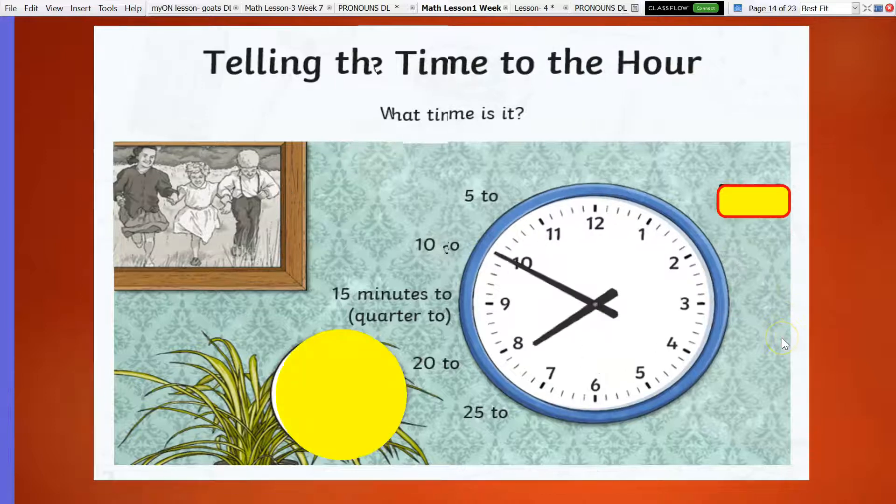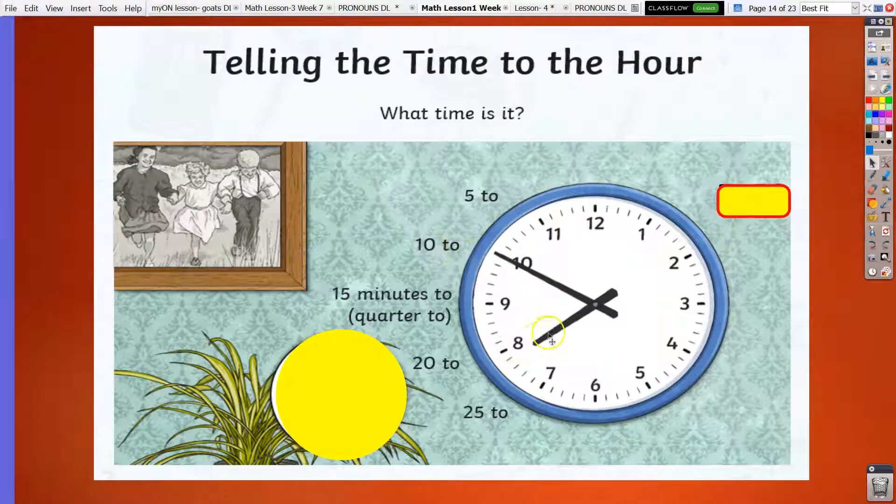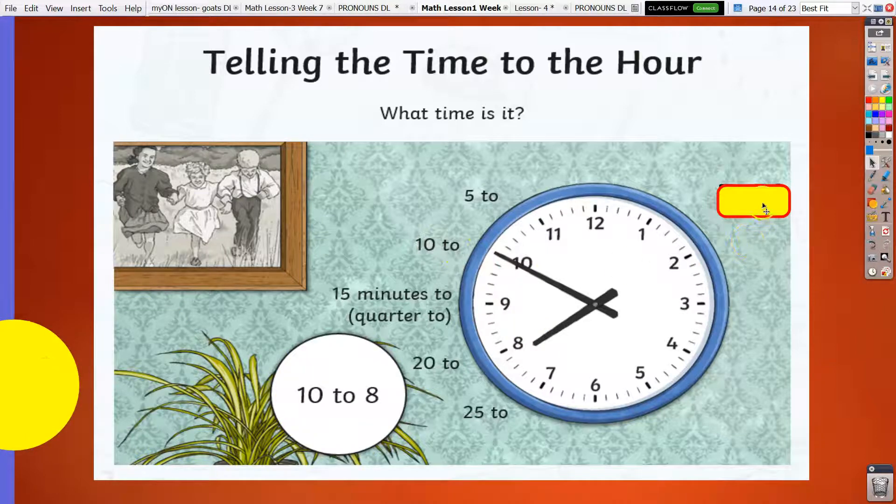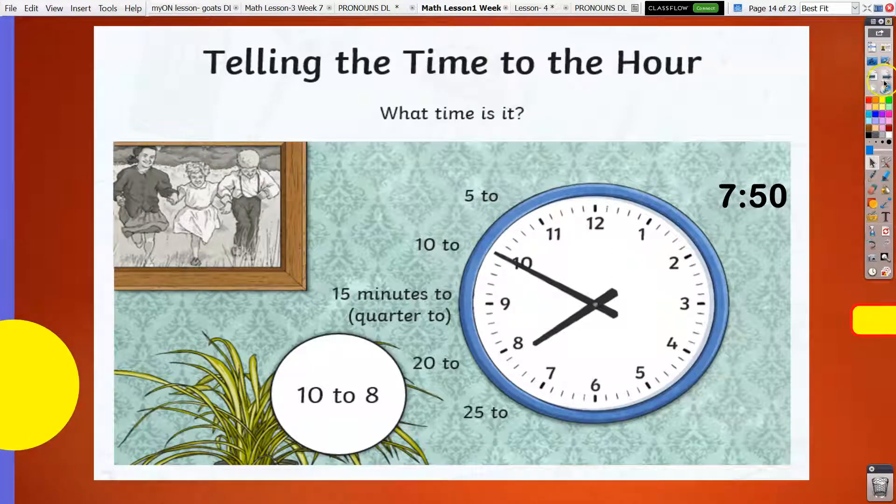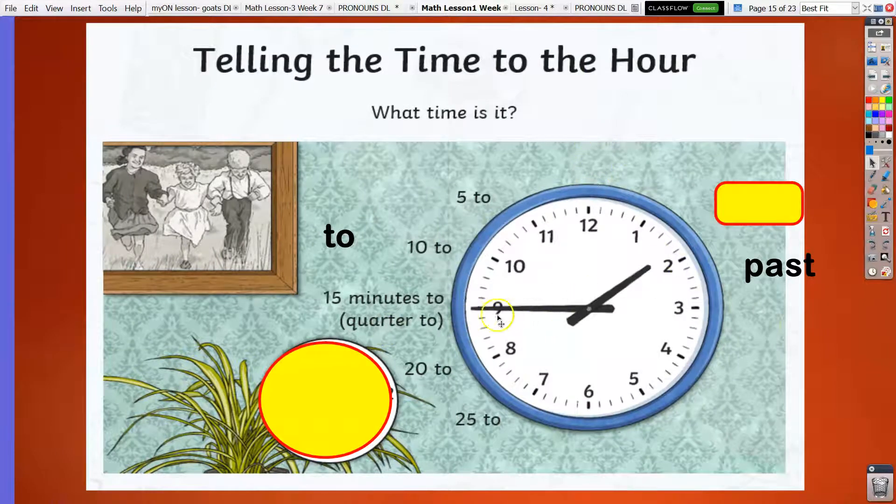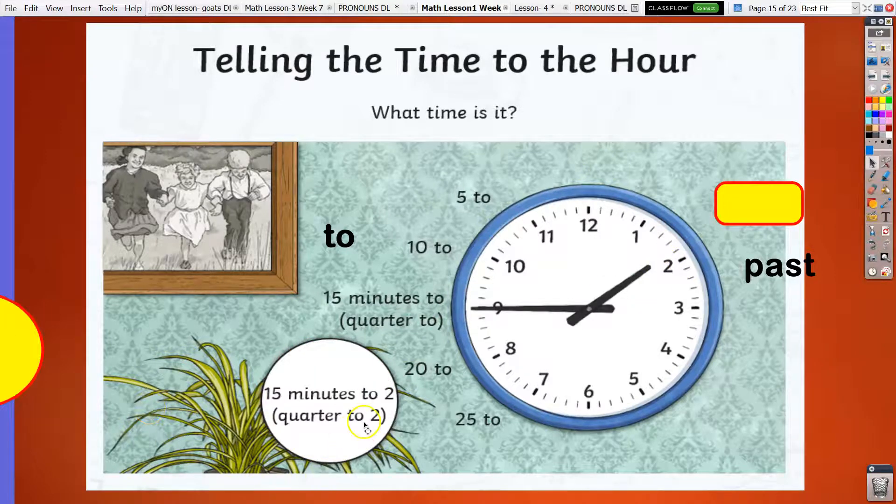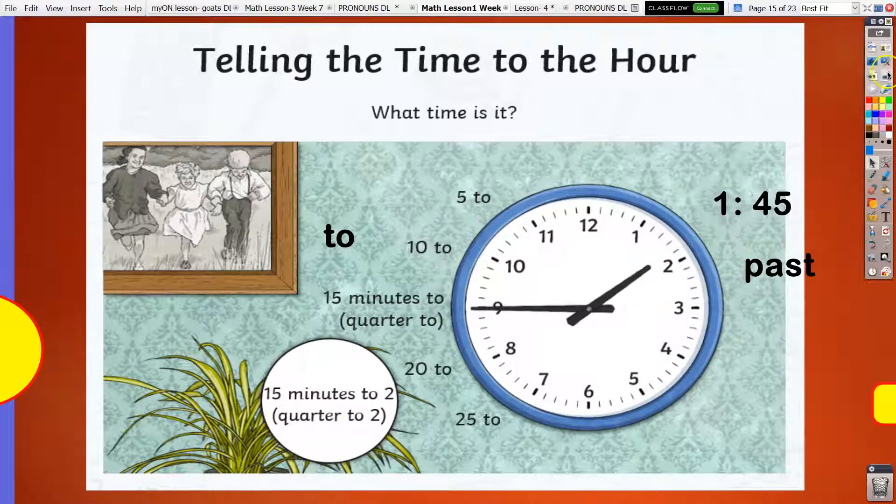Now, what time is it? 5, 10, 2. Next hour is 8, so it's 10 to 8, or 7:50. What time is it? It's quarter to... next hour, 2. So, quarter to 2, or 1:45.